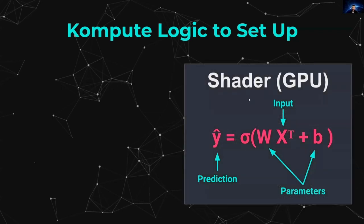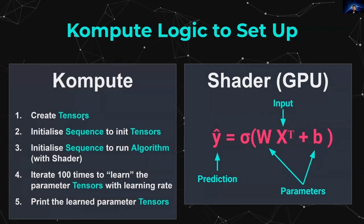The key thing is the shader code we're going to write. Even though we're not covering it in full detail, we're going to look at what's actually required to write it. On the Compute side, this is what is going to be running the shader — we'll need to create a bunch of tensors representing our input data, parameters, predictions, and training data.